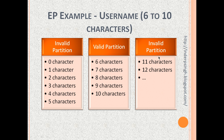Let us say your system accepts a username between 6 to 10 characters long. Here again we have 3 partitions. The first is the invalid partition: any number of characters from 0 to 5 characters. Then we have the valid partition: 6 to 10 characters long usernames. Then we have the invalid partition of 11 characters, 12 characters, or longer. Equivalence Partitioning involves picking one value from each partition: the system should reject values from invalid partitions and accept values from the valid partition.